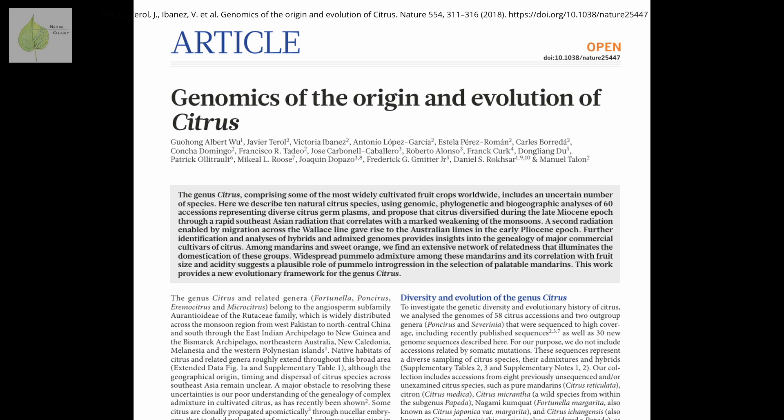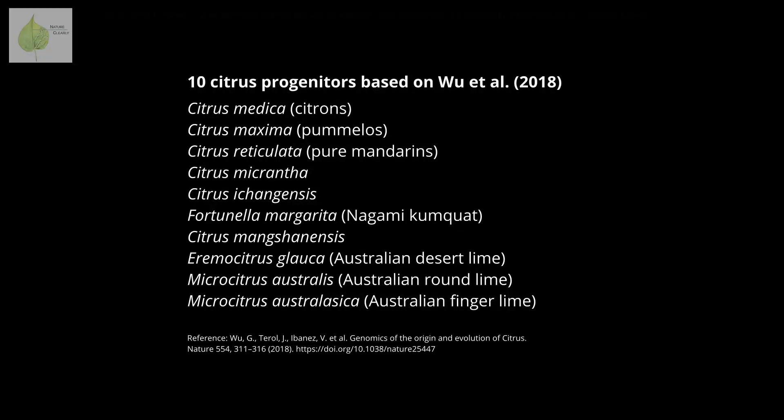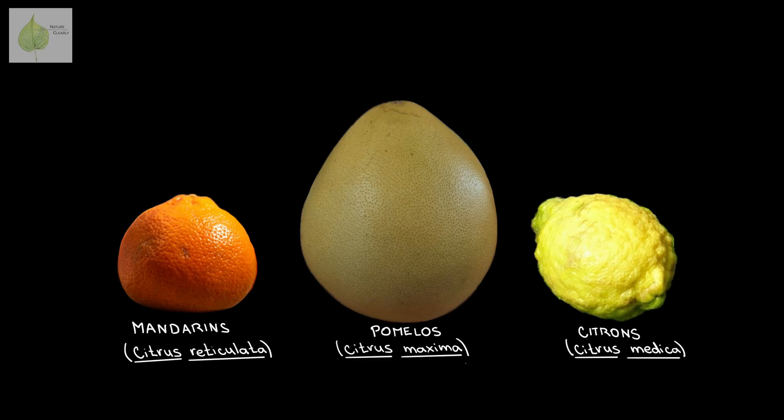A major genomic study from 2018 identified the 10 citrus progenitors, meaning species from which all the other citrus descended. Seven of these are from Southeast Asia and three are Australian. However, the previously mentioned study revealed that the origin of those Australian species traces back to Southeast Asia as well, and they got dispersed to Australia from there. Three of those progenitors are the ancestors of the majority of commercially grown citrus species and are often referred to as core or fundamental species.